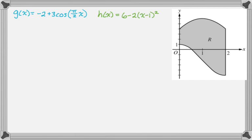We're given that g of x is negative two plus three cosine of pi over two x. h of x is six minus two quantity x minus one squared. And we're given a picture of the region and we're told the region goes from basically zero to two. And the first question is, we want to find the area of r.